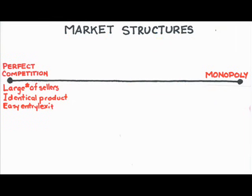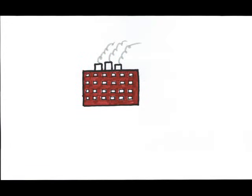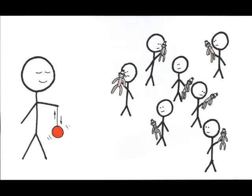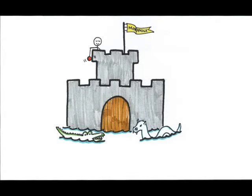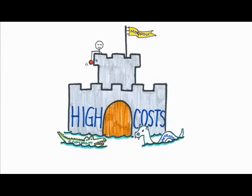Now let's take a look at the opposite extreme of the market structure spectrum. Instead of a huge number of producers, there's only one producer for the whole market — a monopoly, the prefix 'mono' meaning one. Furthermore, the monopolist's product is unique; there really are no substitutes for this product. In a monopolistic industry, entry by other firms is nearly impossible due to extremely high barriers to entry. A barrier to entry could be really high costs or legal protection like patents or copyrights.